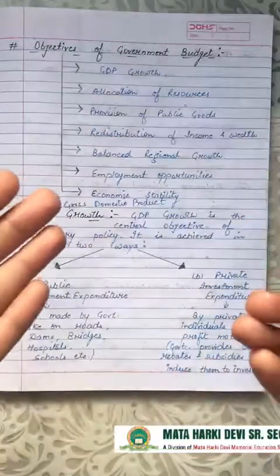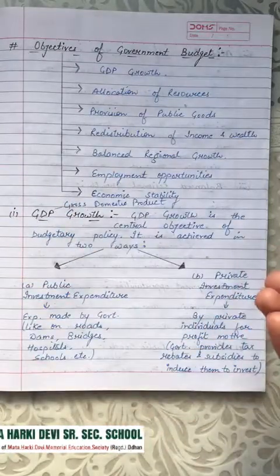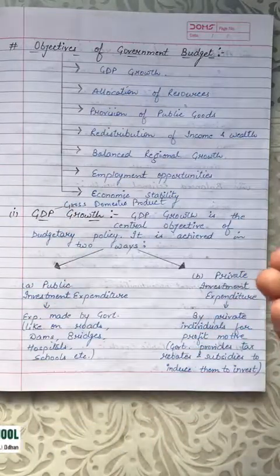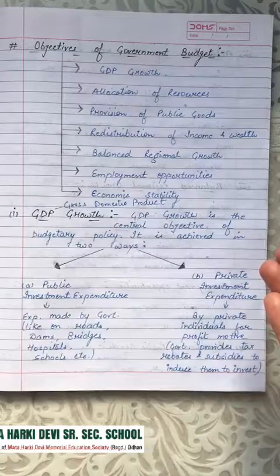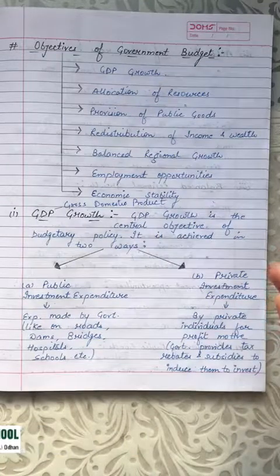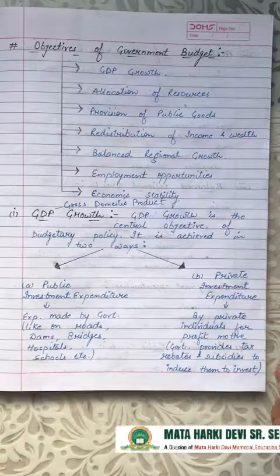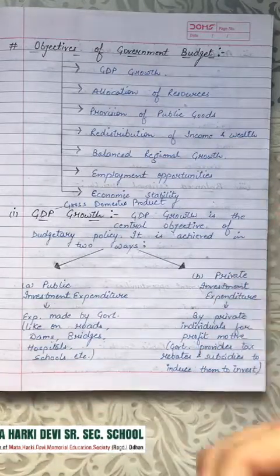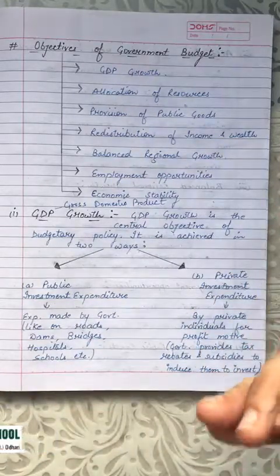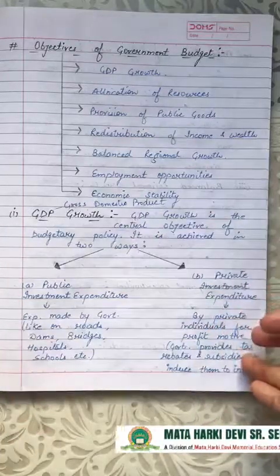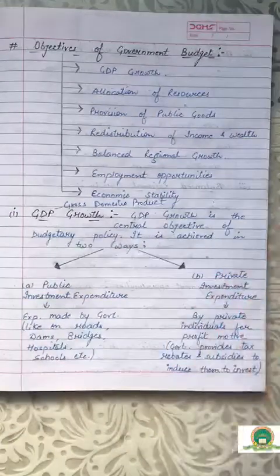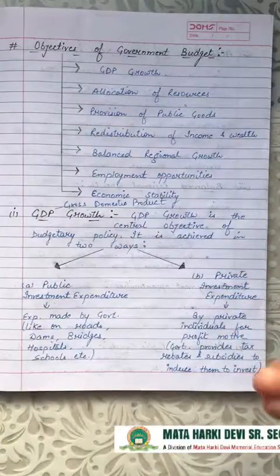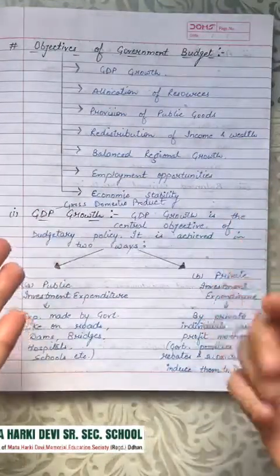In private investment expenditure, private individuals invest money in businesses. When they invest, industries get set up and the country's GDP increases. Since private individuals primarily aim for profit, the government can induce them to set up more industries by providing subsidies, free licensing, and tax rebates — making them feel motivated to start various businesses and expand the country's GDP.